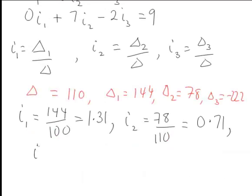Finally i3 being delta3 which is negative 222 divided by delta being 110 is negative 2.02 correct to two decimal places. This is an example of applying Cramer's Rule to solve a system of equations.